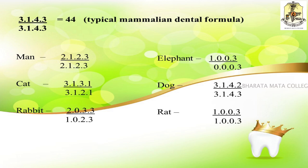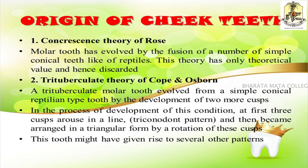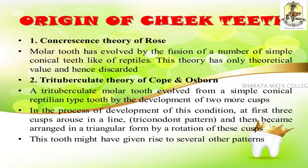Coming to the origin of cheek teeth — that is, premolars and molars — two theories were proposed: the concrescence theory of Rose and the trituberculate theory of Cope and Osborne. The most accepted one is the trituberculate theory, while the concrescence theory has only theoretical value and has been discarded. The concrescence theory says the molar tooth evolved by fusion of different simple conical teeth like those of reptiles. The trituberculate theory states that the trituberculate molar evolved from a simple conical reptilian tooth by development of two or more cusps. The first three cusps arose in a line — the triconodont pattern — and then arranged in a triangular fashion by rotation, giving rise to several different forms of cheek teeth.